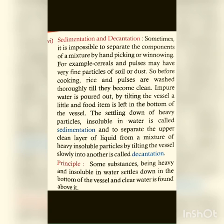Before cooking, rice and pulses are washed thoroughly till they become clean. Hand picking या winnowing के बाद हम pulses या cereals को अच्छे से धो लेते हैं। Rice and pulses को बनाने से पहले अच्छे से एक-दो बार wash कर लेते हैं तो वो साफ हो जाते हैं। Impure water is poured out by tilting the vessel — जब हम किसी vessel में rice और pulse को लेते हैं, उसमें पानी डाला, थोड़ा सा tilt कर दिया, सारा पानी बाहर हो गया और bottom में हमें clean food item मिल गया।